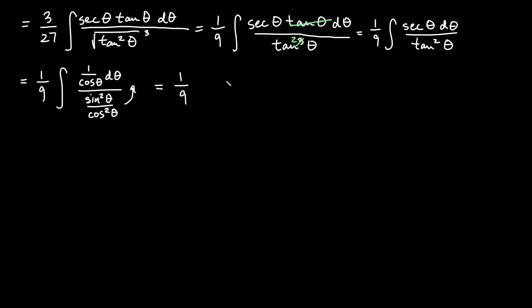So we'll go ahead and bump this up and multiply by the reciprocal. So we'll say 1 over 9. Integral 1 over cosine theta times the reciprocal down below. It would then be cosine square theta on top. The sine squared theta moves to the bottom. D theta. And then we can reduce a cosine with one of the cosines there. That will give us 1 over 9. Integral of cosine theta over sine squared theta d theta.